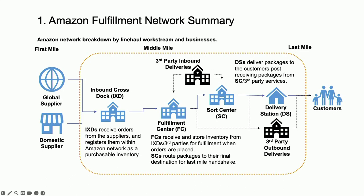What you're seeing on screen is what happens at Amazon and our competitors as well. In the first mile, global and domestic suppliers send us units of goods that customers can order. After that process — the inbound — the middle mile starts. This is where transfers occur between Amazon-owned sites or to other sites, and the majority of those moves are done by trucks. We also have other methods. The inbound cross-doc, which is publicly documented, breaks down supplier goods into different units that customers can order.